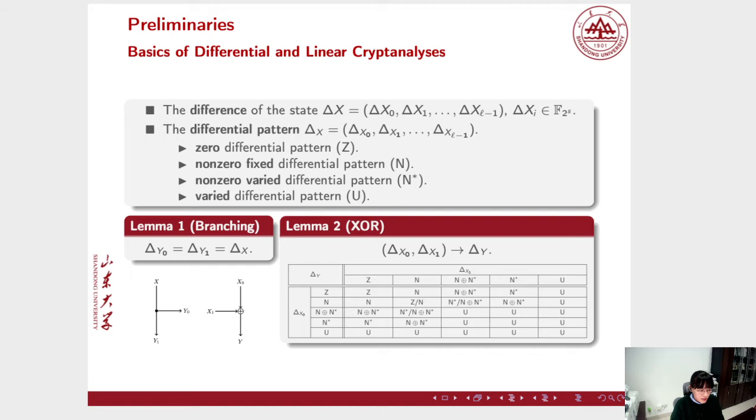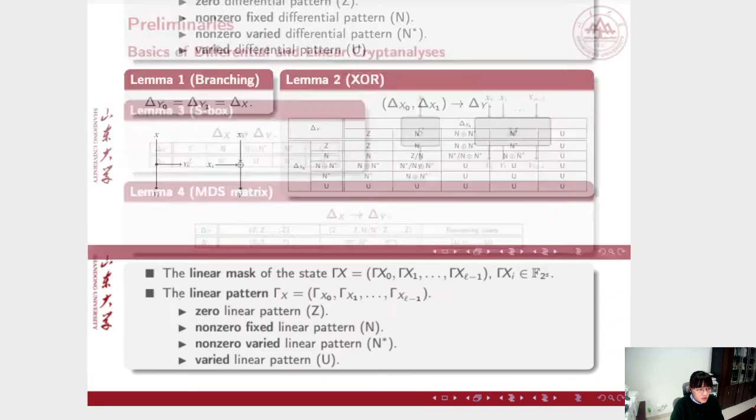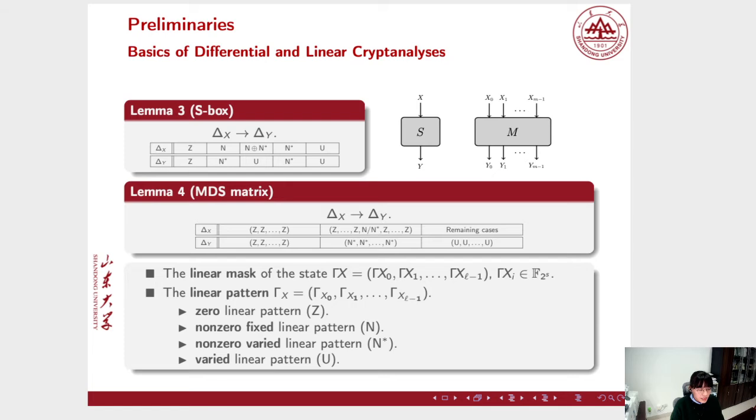The propagations of differential patterns through different operations obey different rules. For instance, the two output differential patterns of the branching operation should equal the input pattern. We also list the propagation rule for XOR, S-box, and MDS matrix operations. With the iteration of the round function, the differential pattern of the internal state gradually loses information. A truncated differential can be extracted before the internal pattern turns into a vector with all elements being U.